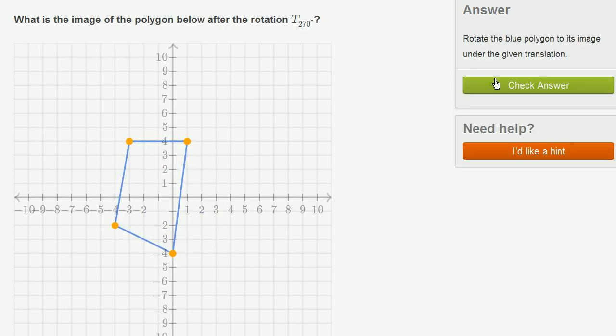Let's do a few more. So what's the image of the polygon? So they want us to do another 270 degree rotation. So like before, let's rotate this three-fourths of the way around. So let's see how we can do that. So right now, so this is going to be a little bit trickier.